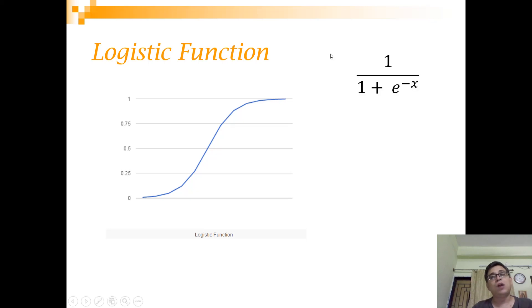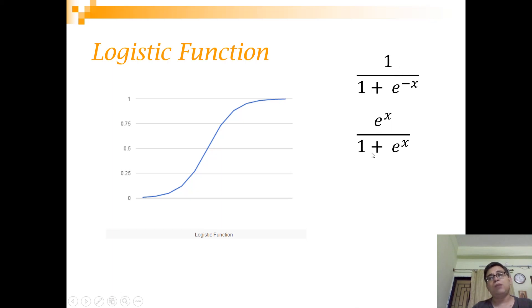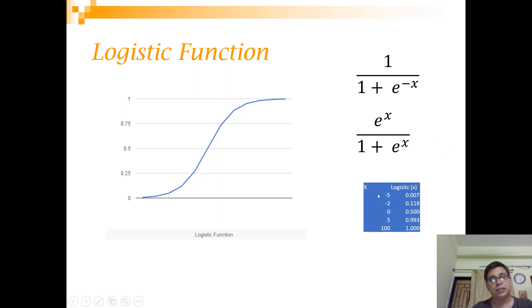The equation of the logistic curve is 1 divided by (1 + e to the power of minus x), plotted on the y-axis against x. With minor manipulation this becomes e to the power x divided by (1 + e to the power x). Looking at the values: for negative x such as minus 2 the output is 0.119, for x equal to 0 it is 0.5, and for positive values it approaches 1. This function always has a value between 0 and 1.